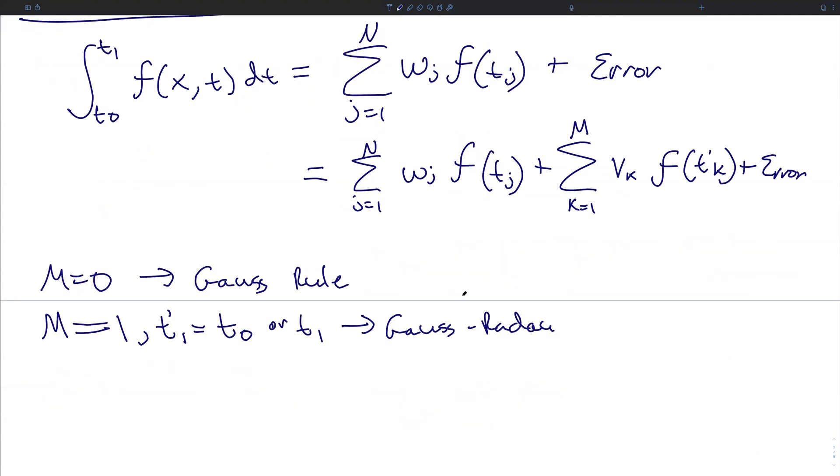The unknown nodes, t sub j, can be calculated as the roots of the ratio of Legendre polynomial p sub n minus 1 of t plus the Legendre polynomial p sub n of t divided by 1 plus t. This gives rise to a polynomial expression. Solving for its roots gives you the optimal placement of these nodes.